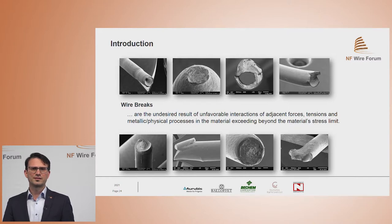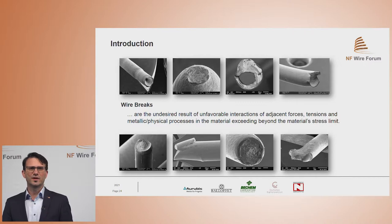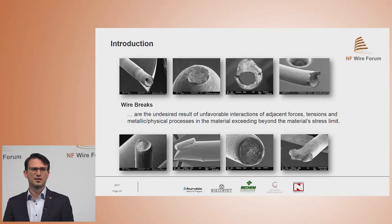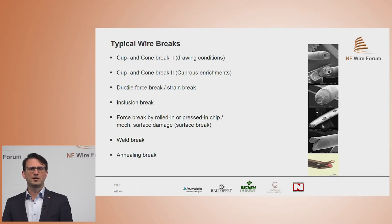Unfortunately, there are incidences resulting in wire breaks which lead to downtimes in your production departments. It is important to understand what kind of wire breaks a sample shows and what leads to the different wire break types. Wire break is an unfavorable result of interactions between wire material, drawing dies, lubricant, the machine, and the drawing process parameters. In general, there are well-known wire break types which occur from time to time in each and every wire production facility.